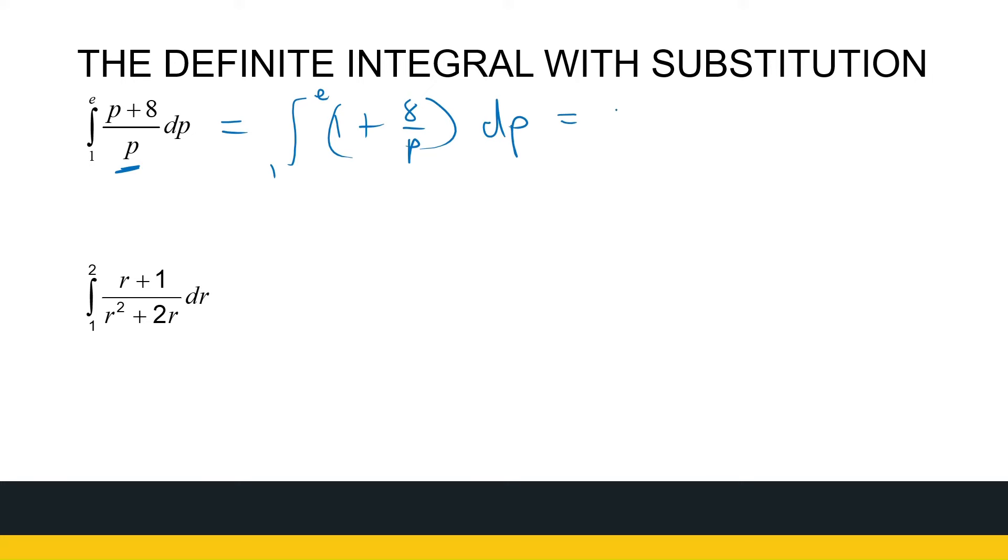That antiderivative is p plus 8 ln p. It's ln of the absolute value. We'll talk about that shortly between e and 1. So that is e plus 8 ln e. Now because the absolute value of e is already positive, I don't need the absolute value signs anymore. Minus 1 plus 8 ln 1. 1 is already positive, so I don't need that absolute value. Now ln of e is 1, ln of 1 is 0. So that gives me e plus 8 minus 1, which is e plus 7.